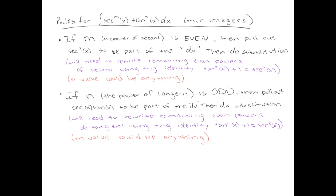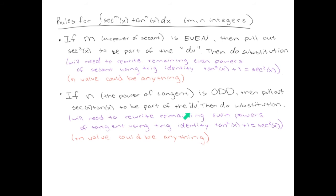Here's the final rule: if the power of tangent is odd, pull out a secant tangent to be part of the du. Since the original tangent power is odd, pulling out one tangent together with a secant leaves an even power of tangent remaining, which we rewrite using the identity tangent squared equals secant squared minus 1. Similar to the previous rule, the power of secant can be anything.